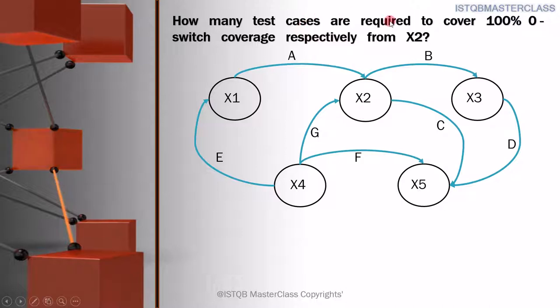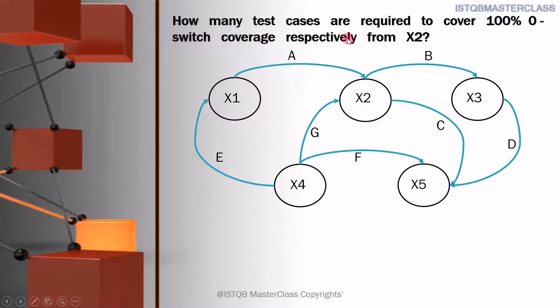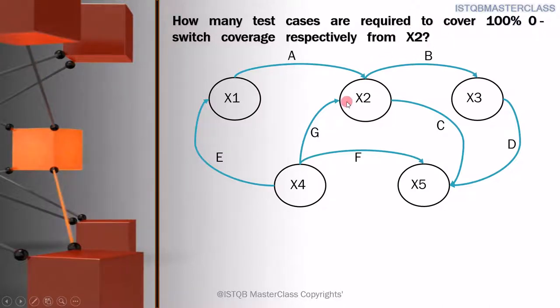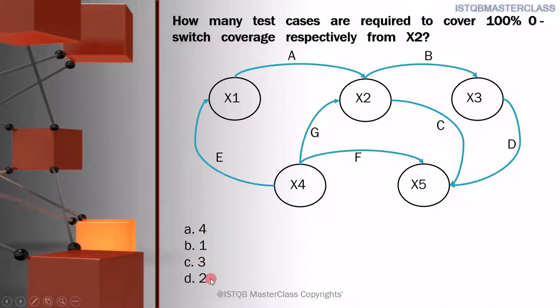How many test cases are required to cover 100% 0-switch coverage from X2? Here we have different states or nodes X1, X2, X3, X4, and X5. But in the question, they are specifically talking about X2, which is over here. The options given are 4, 1, 3, and 2.